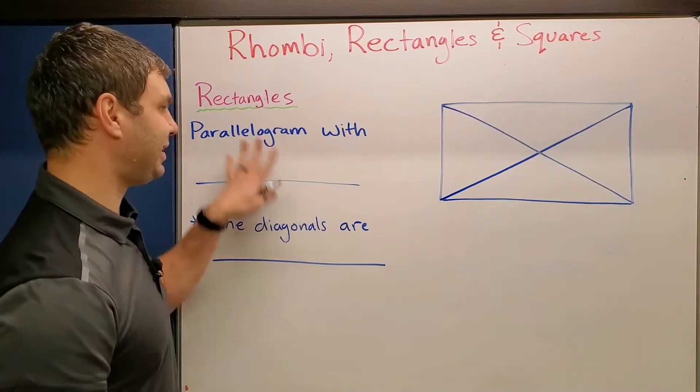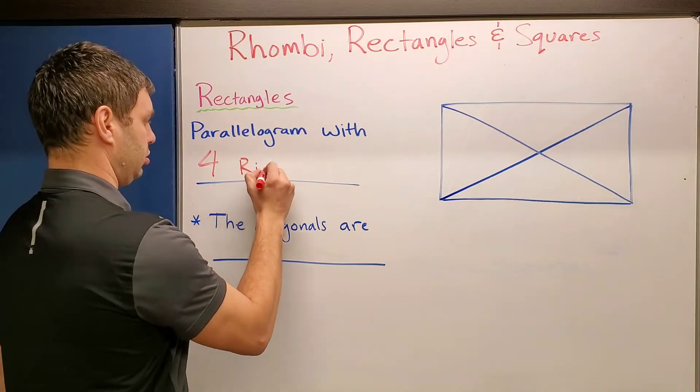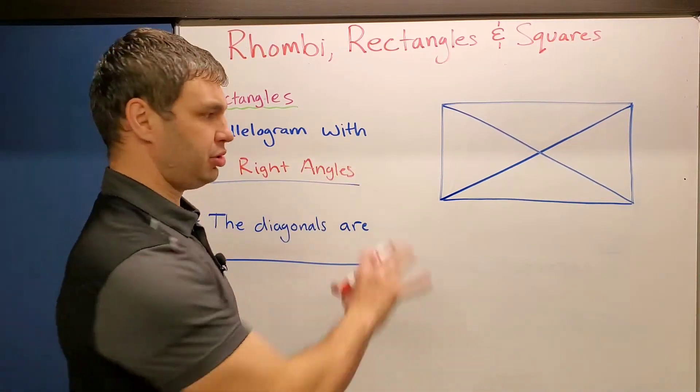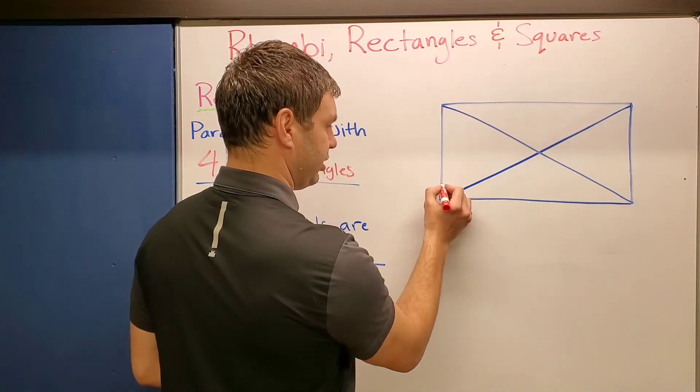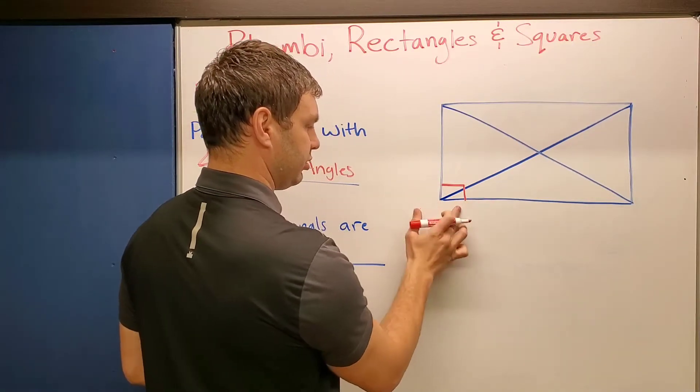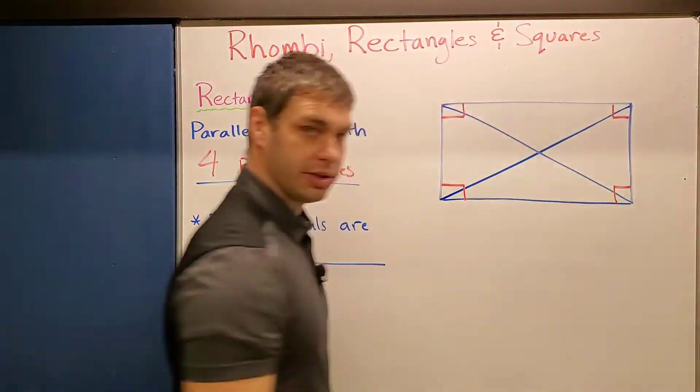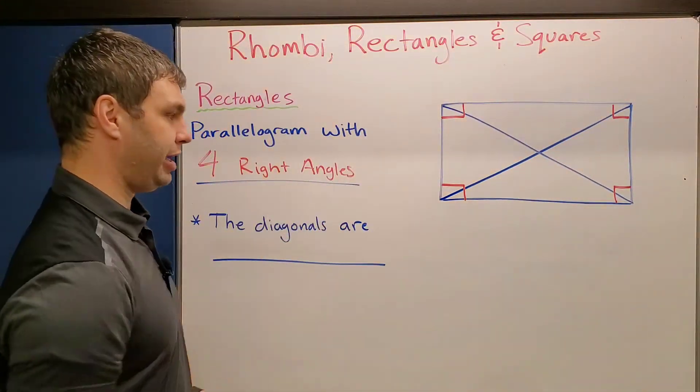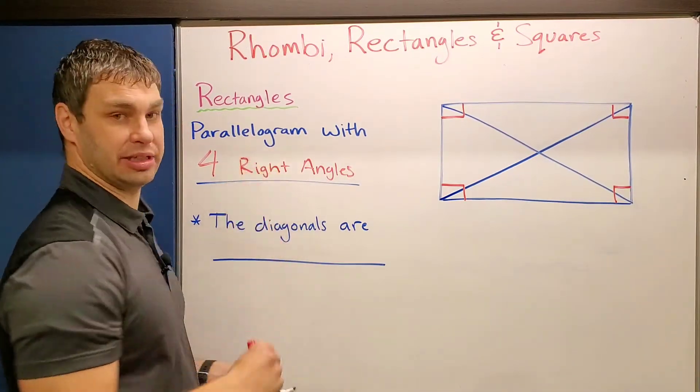Alright. Next shape is the rectangle. The rectangle is a parallelogram with four right angles. So in my picture over here, the way I can mark that up is it's not just part of the angle. Remember, it's the whole angle that goes through both of these. So here, here, and those two. Alright. So four right angles, that has to be a rectangle, as long as it also is a parallelogram.